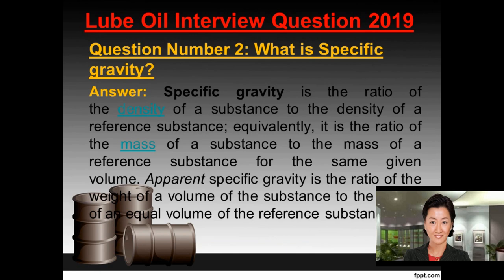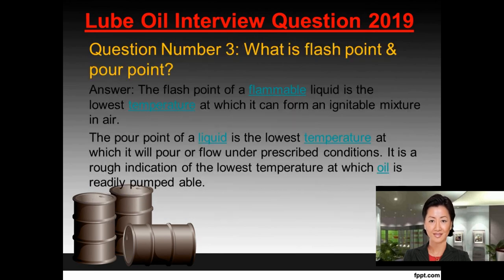Question number two: What is specific gravity? Answer. Specific gravity is the ratio of the density of a substance to the density of a reference substance. Equivalently, it is the ratio of the mass of a substance to the mass of a reference substance for the same given volume. Apparent specific gravity is the ratio of the weight of a volume of the substance to the weight of an equal volume of the reference substance.